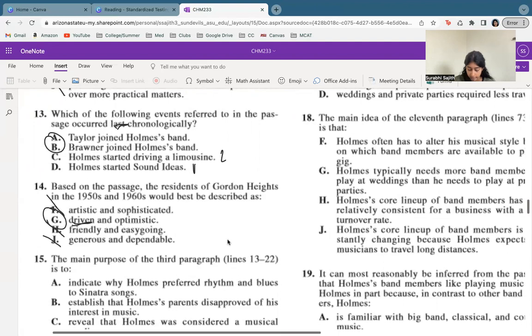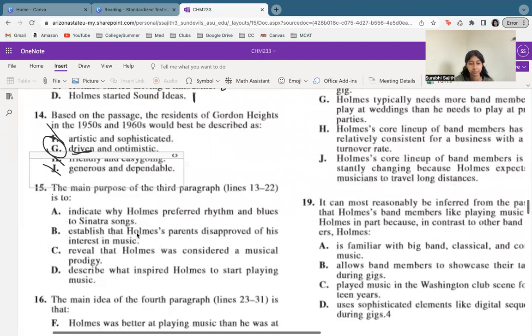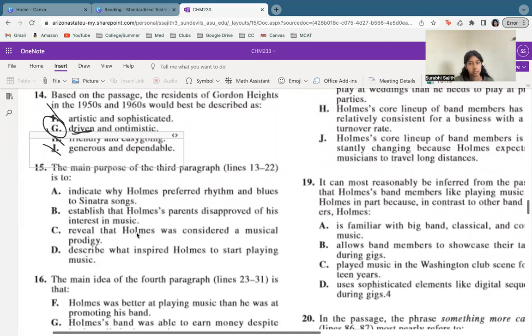Now the main purpose of the third paragraph, let's jump back to the third paragraph, lines 13 to 22, right? If we read through this really quick, it kind of talks about what he was listening to and then he finally got a guitar and he started playing some music. So let's see, it kind of talks about like how he started getting into music, I would say. A is definitely not correct. It is nothing specific to Sinatra. While that might have been an inspiration, it doesn't mean he only listened to Sinatra.